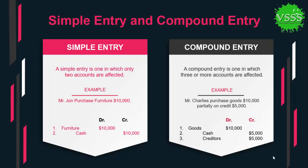A simple entry is one in which only two accounts are affected — one is debited and the second one is credited. For example, Mr. John purchases furniture for $10,000. In this transaction, two accounts are affected: the furniture account and the cash account. The furniture account is debited by $10,000 and the cash account is credited by $10,000.